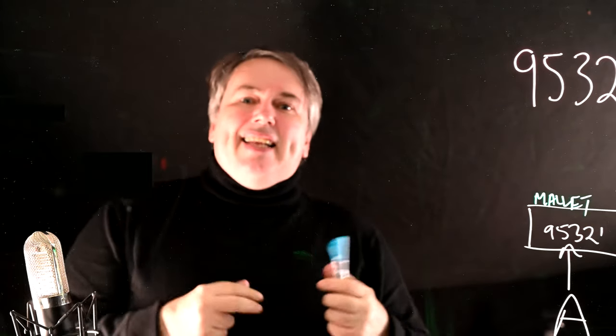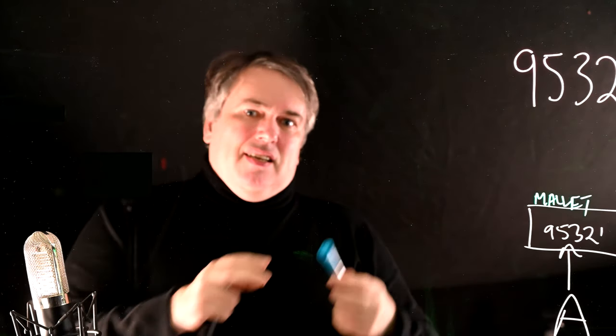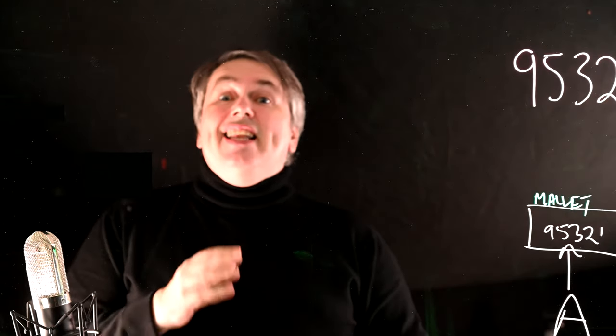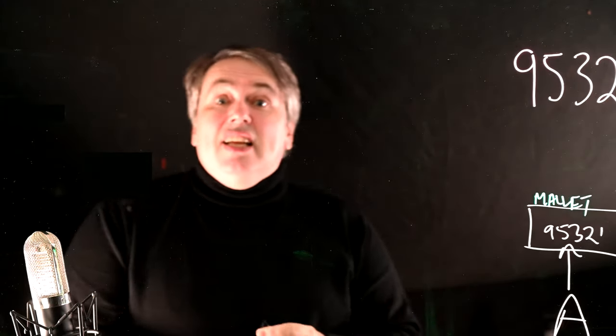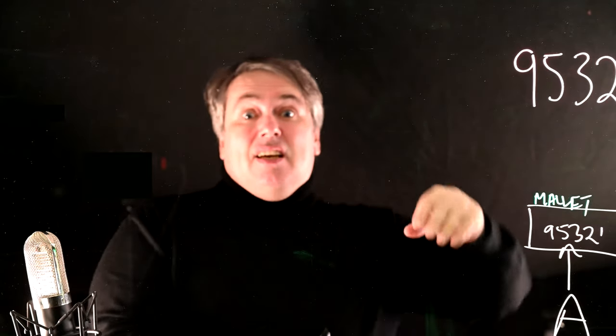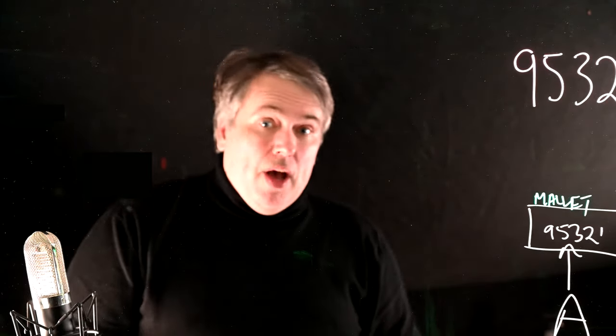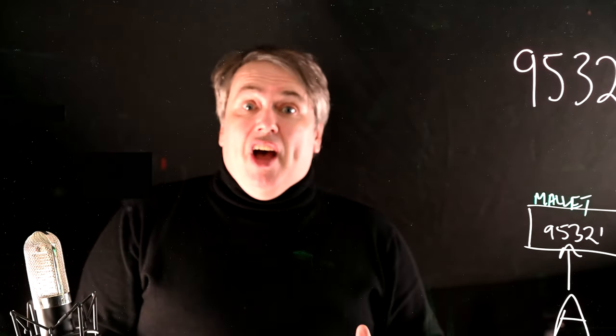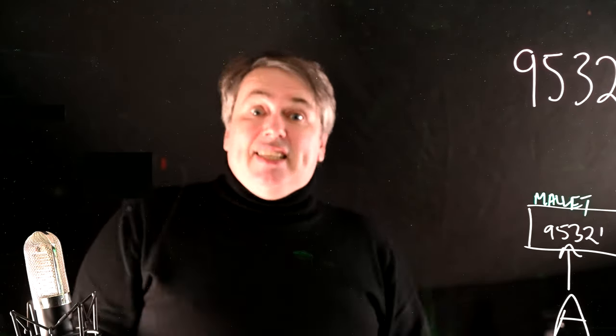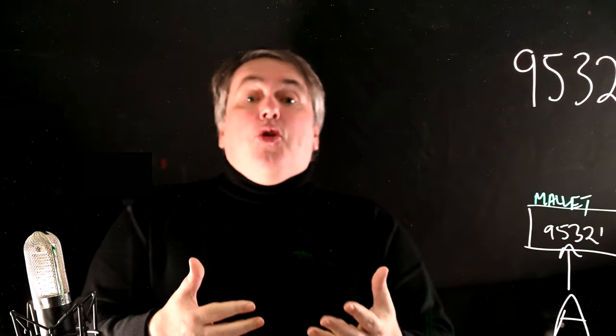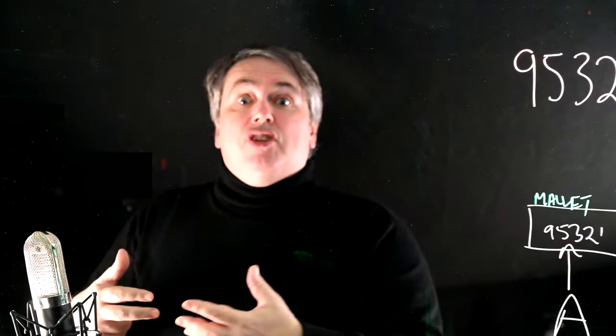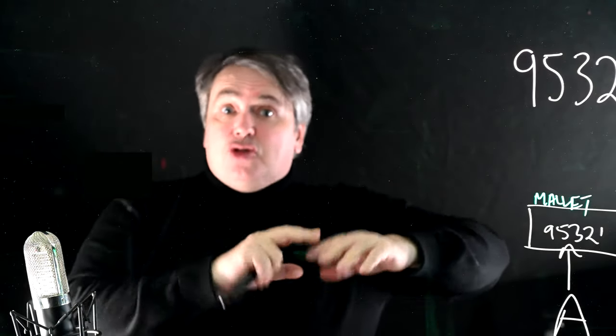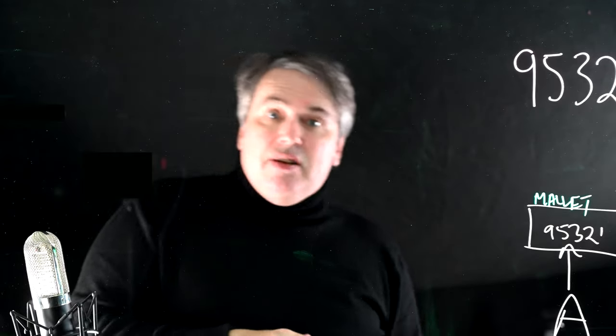So when you get down to it, these changing number systems really aren't telling us what we need to know, which is not, did Alice enter a number into some website somewhere? What we really need to know is, did Alice authorize a particular transaction? Did Alice authorize the purchase of 200 Apple shares? Did Alice authorize the transfer of $10,000 to the Nigerian prince?